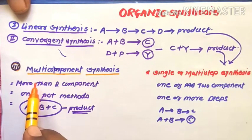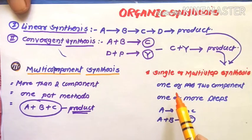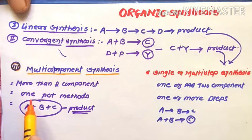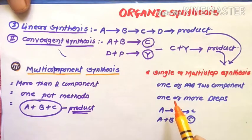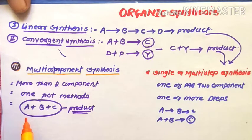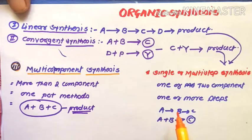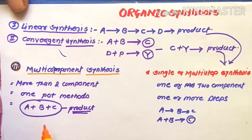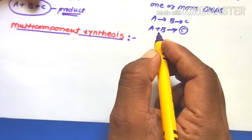Comparing these points: multi-component synthesis proceeds with more than two components reacting in a single step to form product molecules. In single or multi-step synthesis, there is stepwise conversion, which requires more time and gives comparatively lower percentage yield. Therefore, multi-component synthesis is better in terms of yield, economy, and green synthetic routes. The first example of multi-component synthesis is the Biginelli reaction.